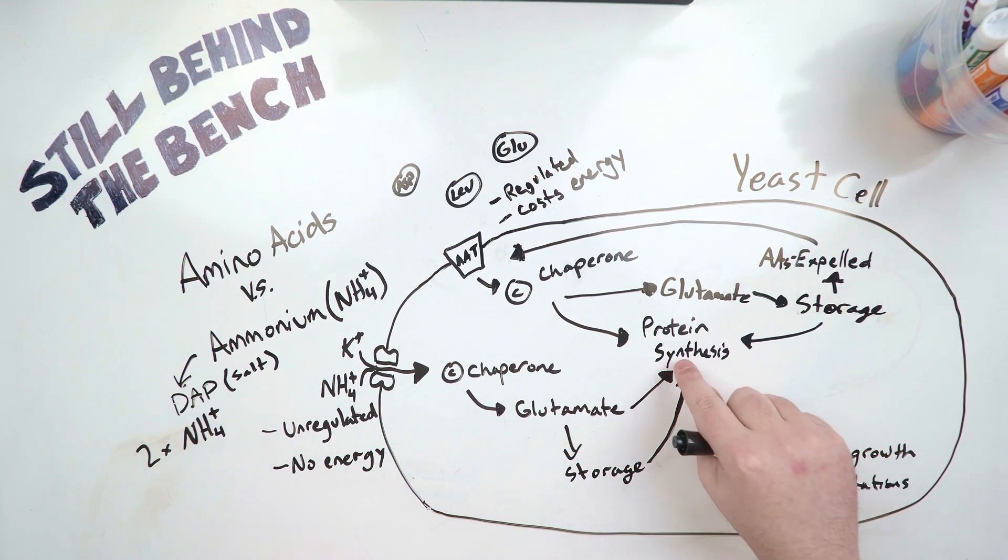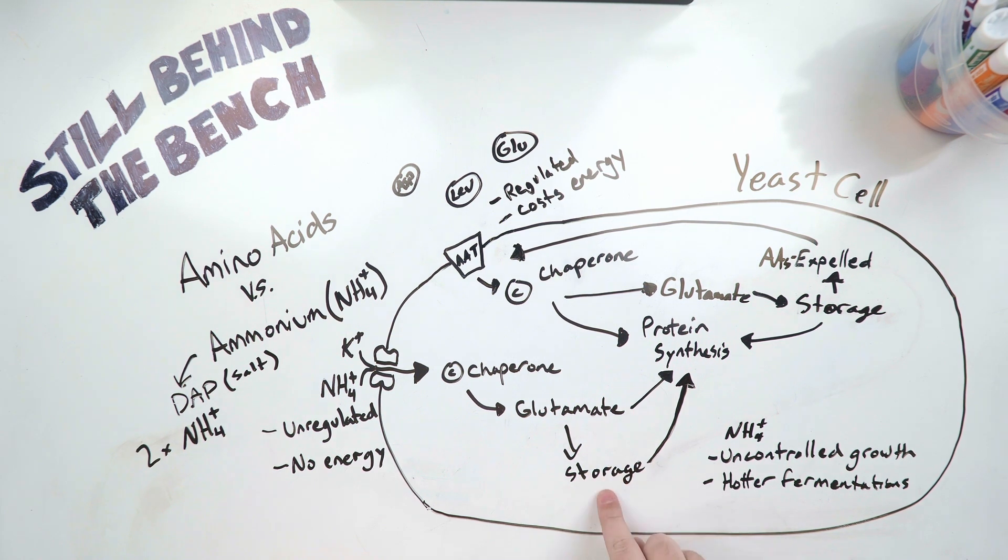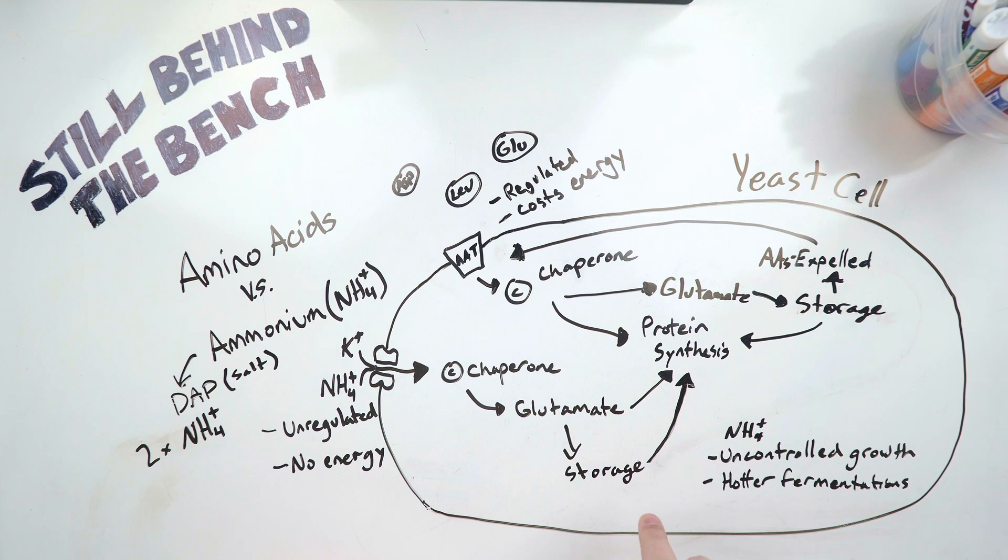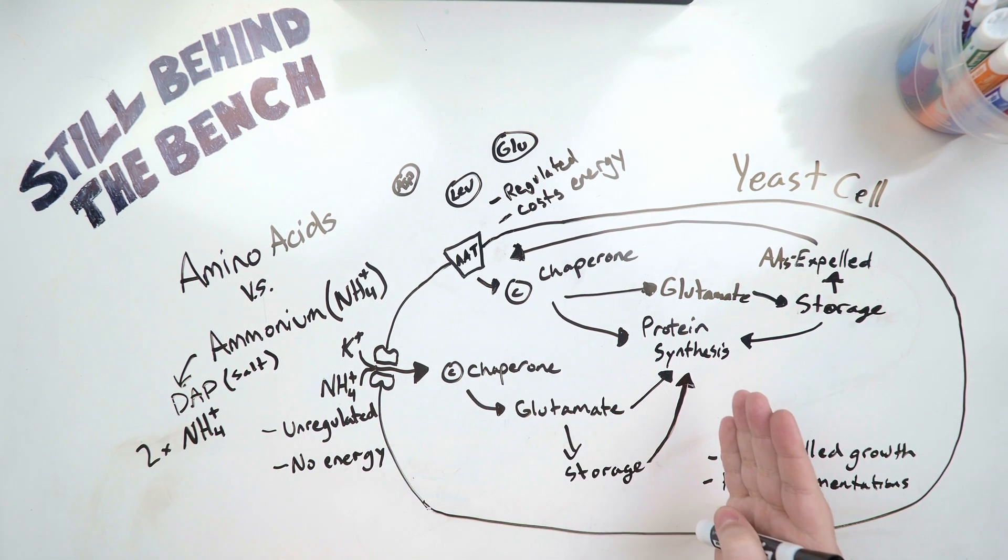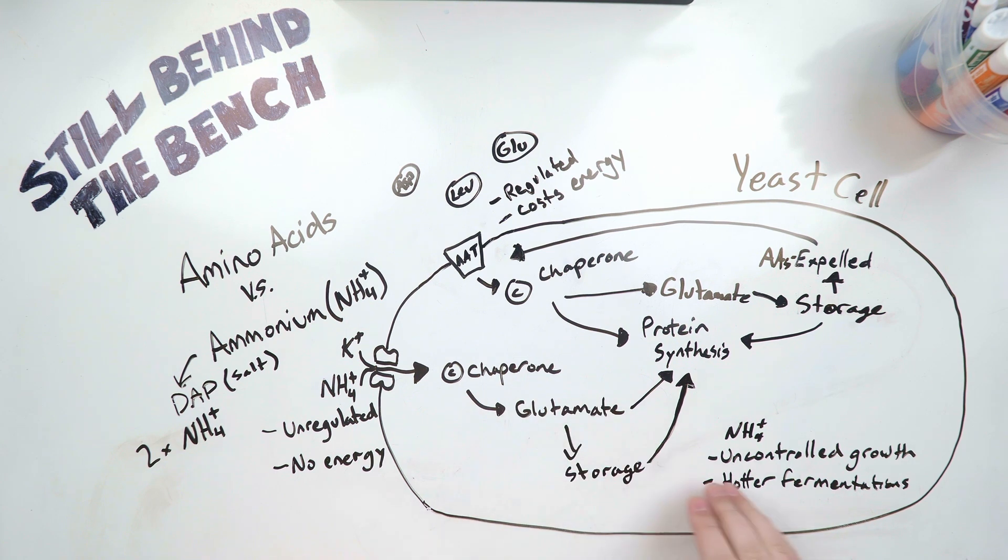It may be turned into another amino acid first though, but if not that glutamate will be taken to a vacuole and it'll be stored there until it's needed. So because that ammonium is just pouring in and the yeast is using it up as fast as it can, it can lead to uncontrolled growth. And uncontrolled growth can also mean more fusel. That is if you put too much ammonium in. That uncontrolled growth can also lead to hotter fermentations because of all that extra metabolism going on which generates heat.